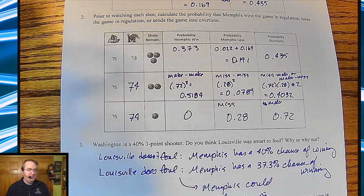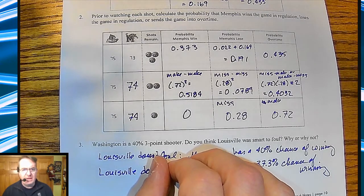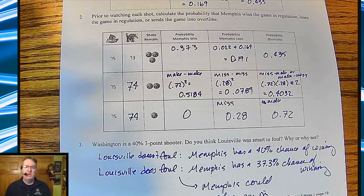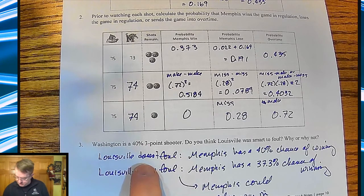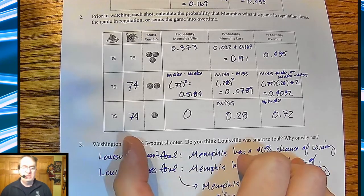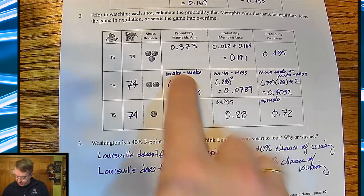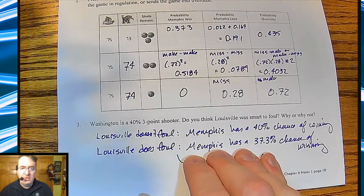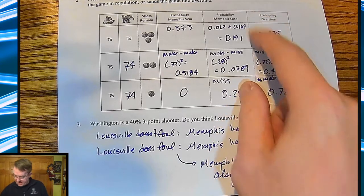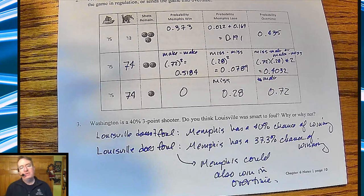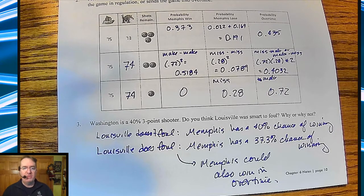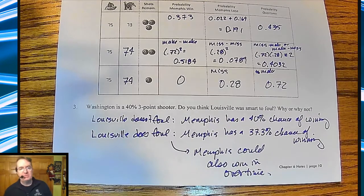Now the question becomes: was fouling a good decision? This is the kind of analytics you're starting to see in professional and college games — 'you're up by two touchdowns with five minutes left, what's the probability of winning?' If Louisville doesn't foul, Memphis had a 40% chance of winning since Washington is generally a 40% three-point shooter. Memphis had a 37.3% chance going to the line, but you also have to factor in the overtime tie possibility. This gives background on how binomial distributions and sports analytics work.